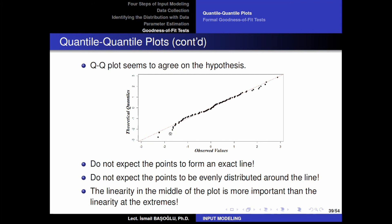The linearity in the middle ground is much more important than the linearity in the tails. If you do not observe linearity in the tails, that is less of a concern. However, if you do not see linearity in the middle ground, then that is certainly a problem. In this shape, I can understand that the null hypothesis can be true.